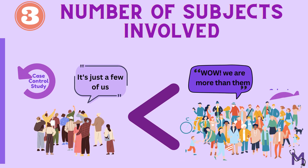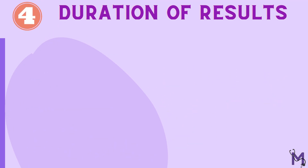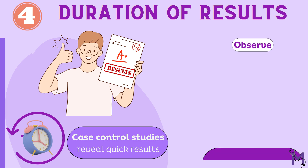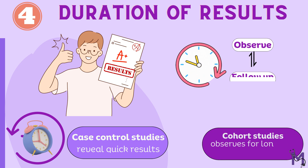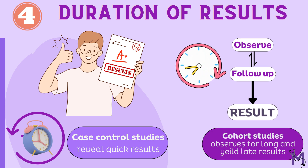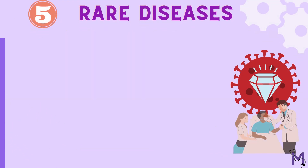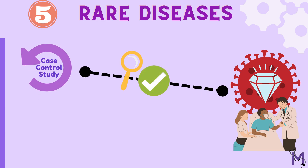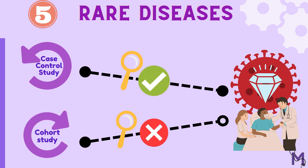Thirdly, based on the number of subjects involved — which are fewer in case-control compared to the large number in a cohort study — results are obtained very quickly in a case-control study, while a cohort study observes subjects over a long period with periodic follow-ups and yields results very late. Rare diseases can only be investigated using a case-control study and not a cohort study.